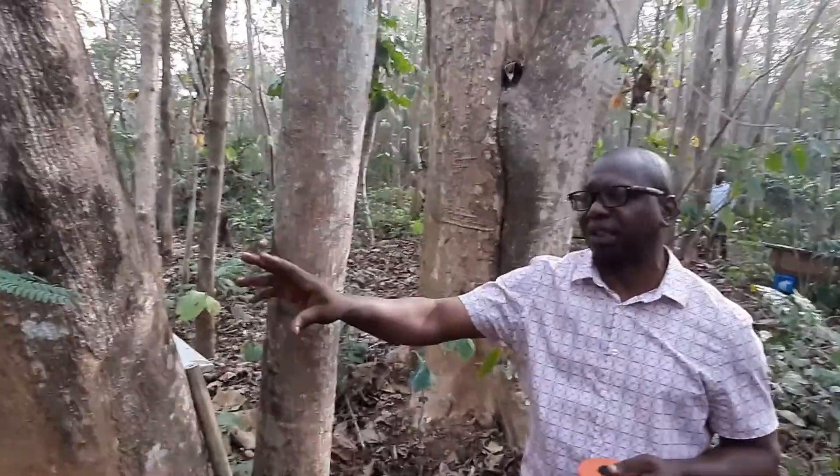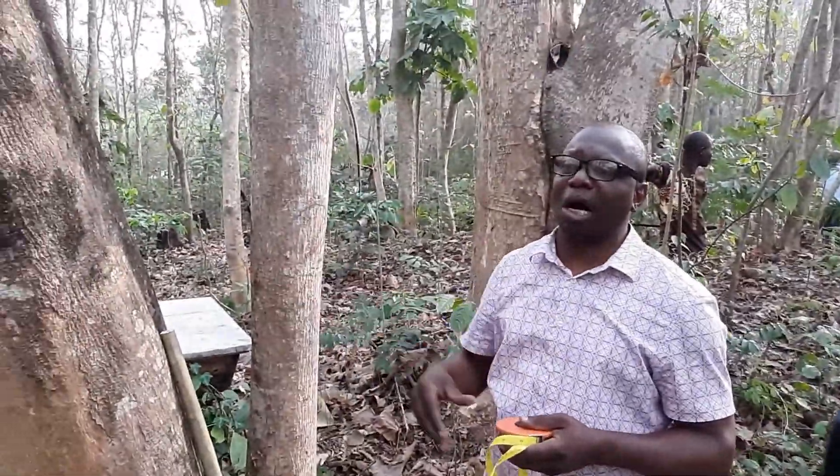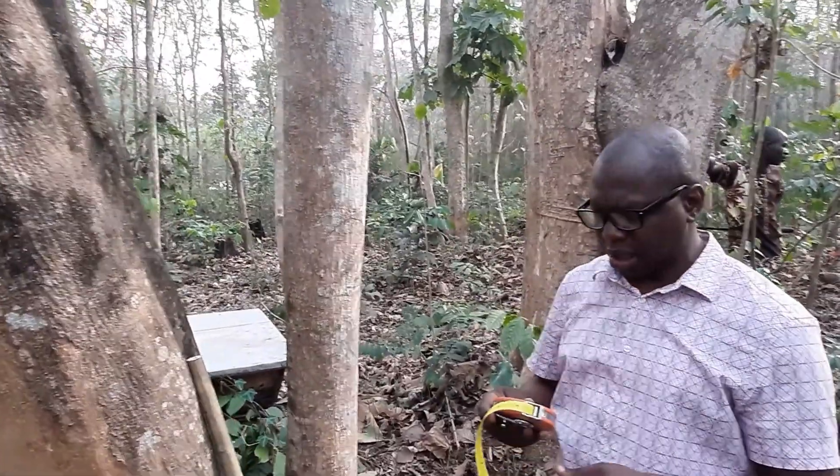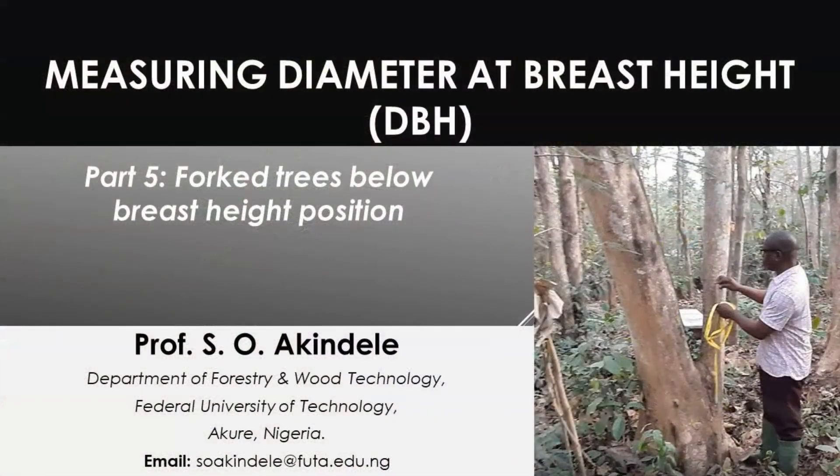You will not add the two together and you will not find the average — you will record them as two separate stems of the same tree. That is how to handle a situation where there is forking below the breast height position. In the next video, we will look at what to do when you encounter a tree on a slope.